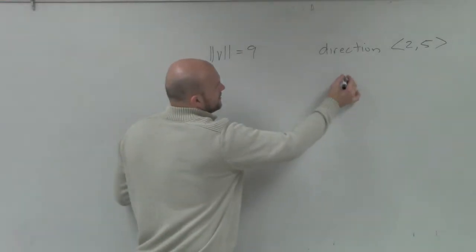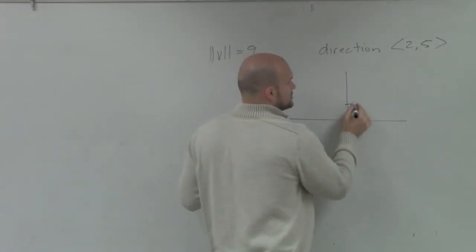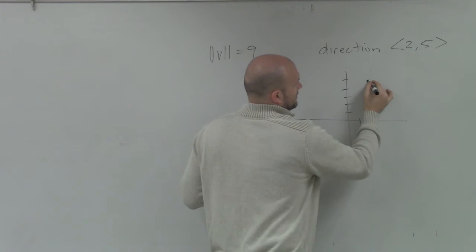So what I would like to do when looking at this is let's plot 2 comma 5. 1, 2, 1, 2, 3, 4, 5. That vector's right there.